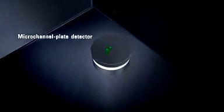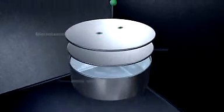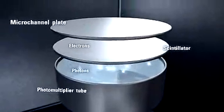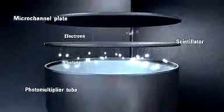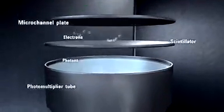The microchannel plate detector converts the ion signal from electrons to photons and back to electrons. This electrically isolates the high voltage flight tube and front of the detector from the signal passed to the electronics.